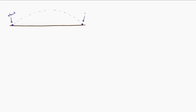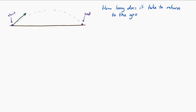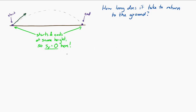Here's another example of information hidden in plain sight. If a projectile is launched from the ground and returns to the ground, then its vertical displacement from beginning to end is zero — displacement is the change in position, and it starts and ends at the same height. There's certainly horizontal displacement, but the vertical displacement is zero meters.